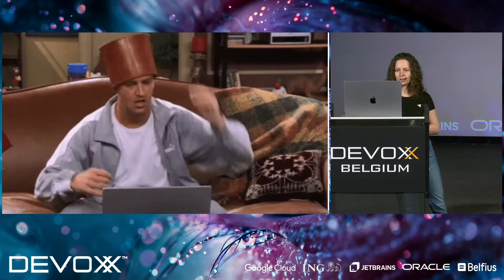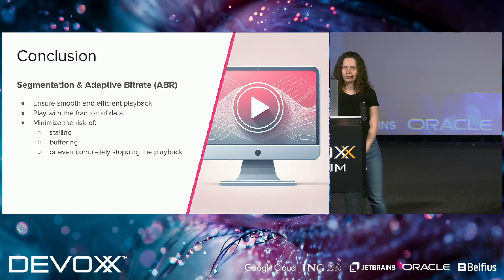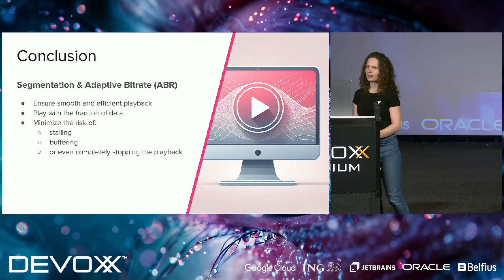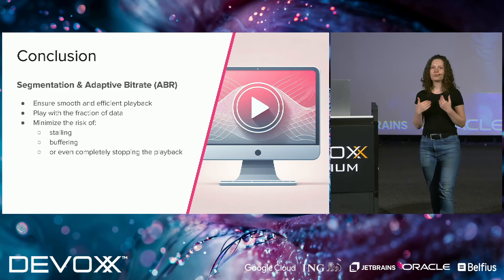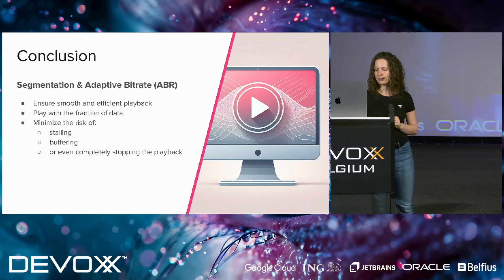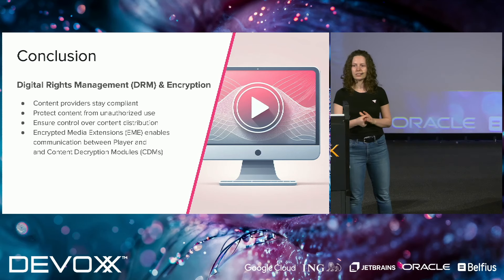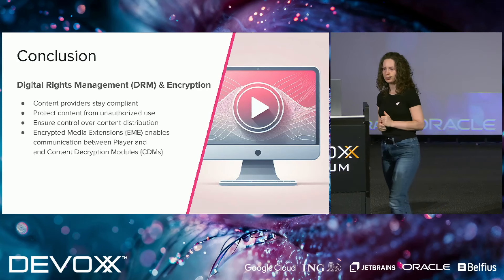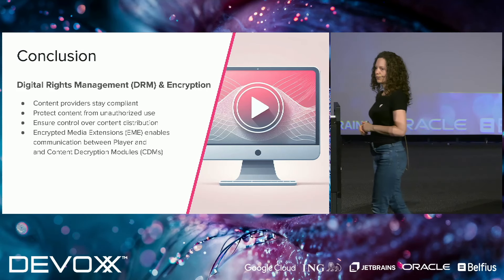That was the second part of the demo. To summarize: segmentation and adaptive bitrate are very important to ensure smooth and efficient playback — thanks to them we control how much data to download, minimize the risk of stalling, buffering, or completely stopping playback. When it comes to encryption, it's very important for content providers to stay compliant — Digital Rights Management protects content from unauthorized use and controls distribution. Once content is encrypted, we can still use Encrypted Media Extensions to decrypt it with the help of the Content Decryption Module.